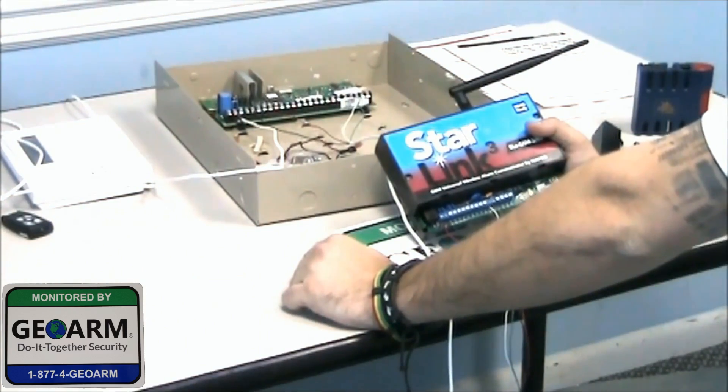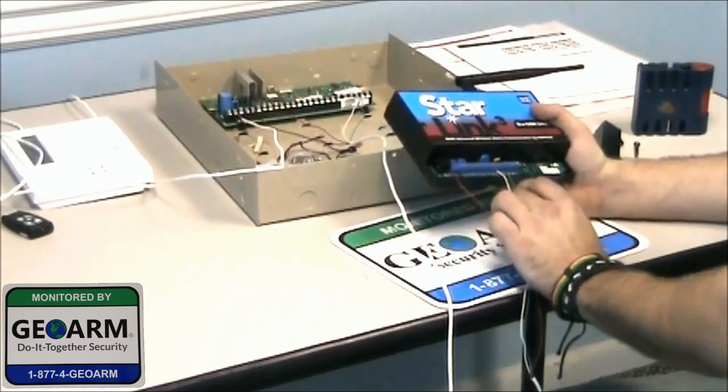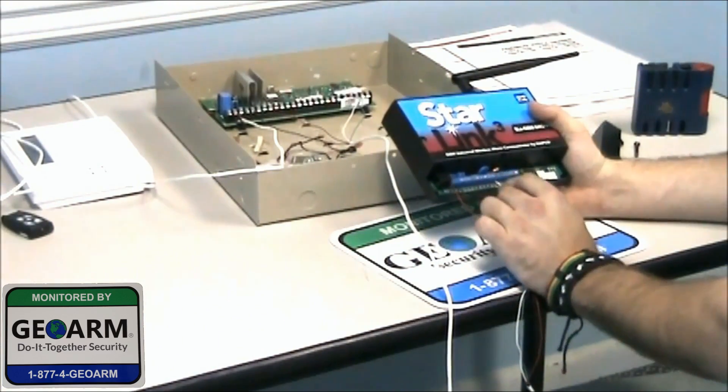Red is going to go to 5. And this is on a Honeywell panel, on a Vista 20P panel. Alright, then you're also going to wire into panel ring and panel tip. In this case,